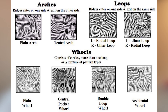There are patterns within these patterns as well. Loops have two sub-patterns: the ulnar and the radial, and loops make up 70% of all prints. Whorls have four types: the plain whorl, central, double loop whorl, and the accidental whorl, accounting for about 25% of fingerprints. Finally, there are two types of arch patterns — plain arch and tented arch — which count for about 5% of all fingerprints.